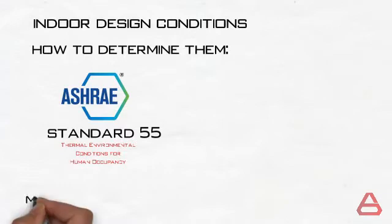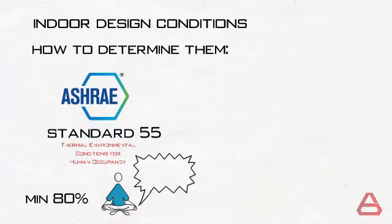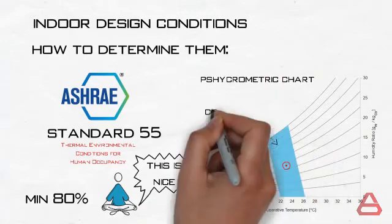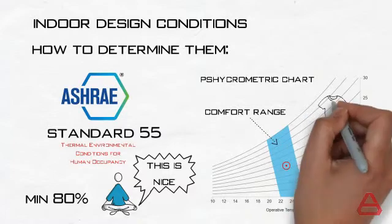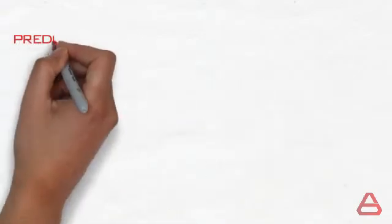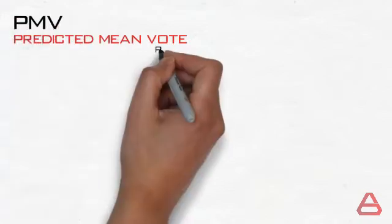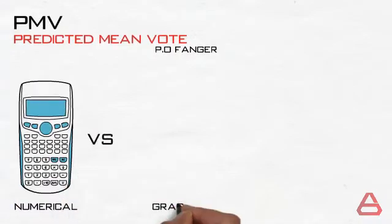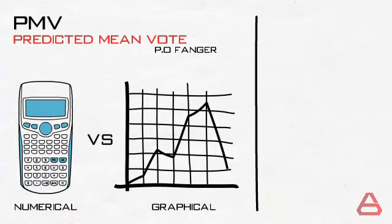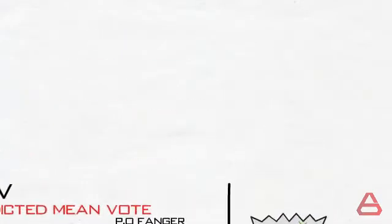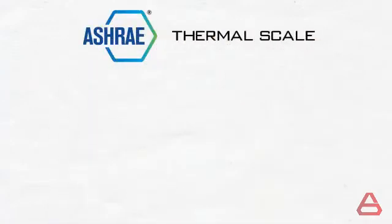The standard demands that at least 80% of a large group of people find a certain environment thermally acceptable. Through research and experimentation, ASHRAE was able to produce a graphical method that provides the range of acceptable operating temperatures and humidity with corrections for clothing and activity. In addition to the graphical method, one can also use the Predicted Mean Vote method, PMV, created by P.O. Fanger. The PMV method provides a more numerical approach instead of a graphical one.